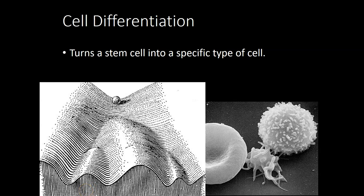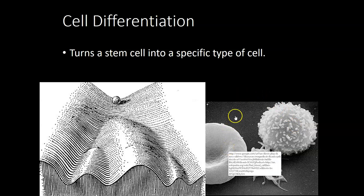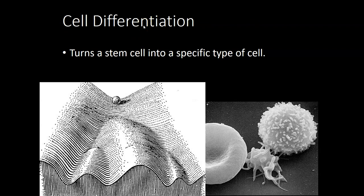Cell differentiation is also called specialization because a cell picks a specific function for the rest of its life. This process converts a stem cell into a specific kind of cell through gene regulation — which genes is that cell going to turn on and off. For example, a red blood cell and a white blood cell both started from a stem cell called a hemocytoblast. If it turns on the gene for hemoglobin, it becomes a red blood cell. If it turns on genes necessary for phagocytosis, like digestive enzyme genes, it becomes a white blood cell.